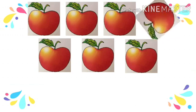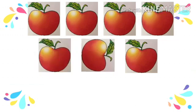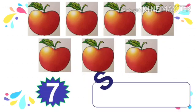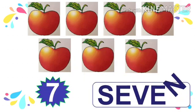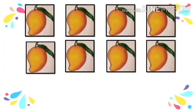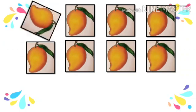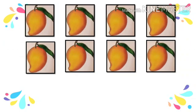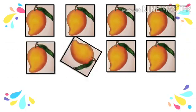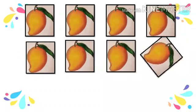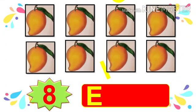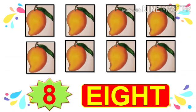How many apples you can see? 1, 2, 3, 4, 5, 6, 7. There are seven apples. S-E-V-E-N, 7. Count the number of mangoes: 1, 2, 3, 4, 5, 6, 7, and 8. Total number of mangoes: 8. E-I-G-H-T, 8.